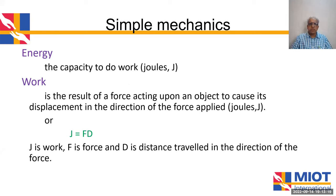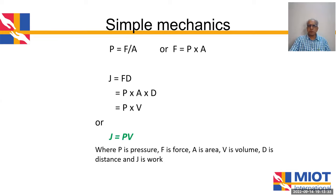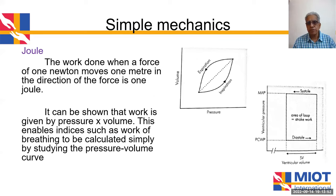Energy is the capacity to do work and is measured in joules. Work is done when force is moved through a distance, so work equals force times distance. Since pressure is force per area and work is force times distance, substituting gives us: work done equals pressure times volume. This is the basis of the pressure-volume curves on monitors. The graph depicts the PV curve of respiration, and the area under the curve is the work done during breathing. Similarly, the cardiac cycle loop area indicates stroke work.